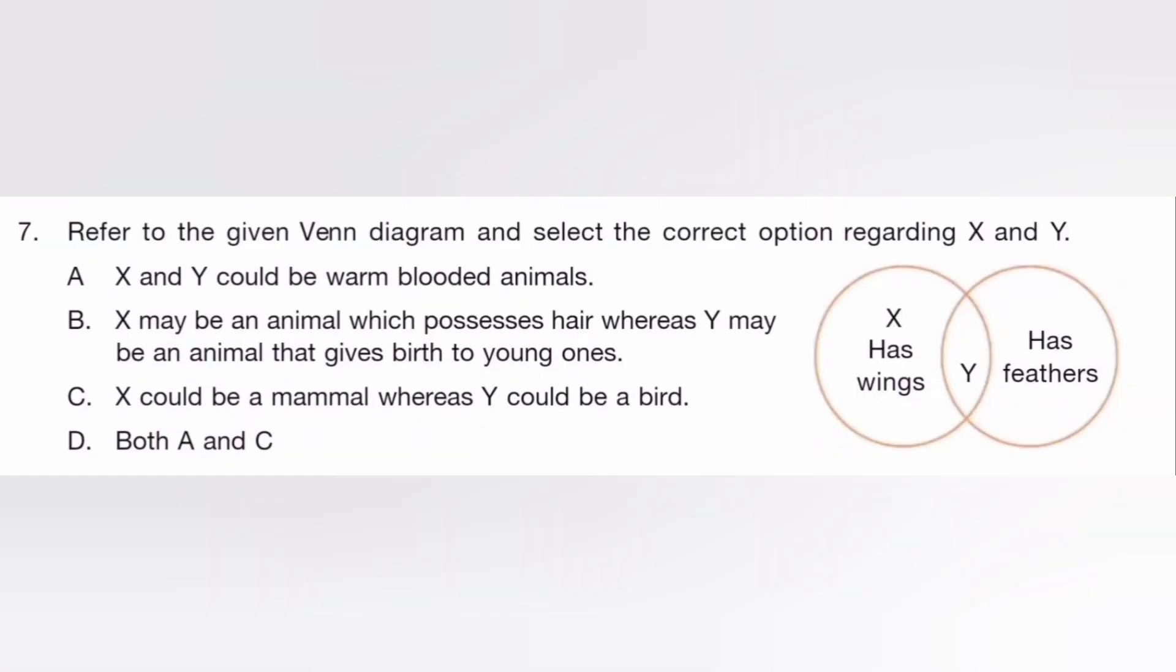Refer to the given Venn diagram and select the correct option regarding X and Y. The answer is D, both A and C.